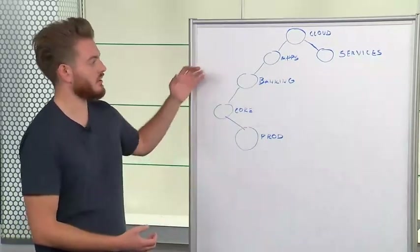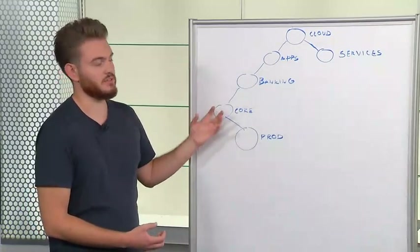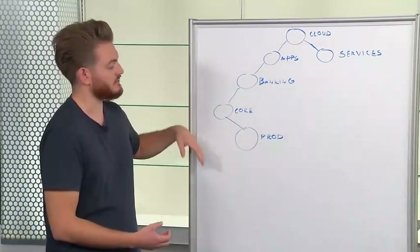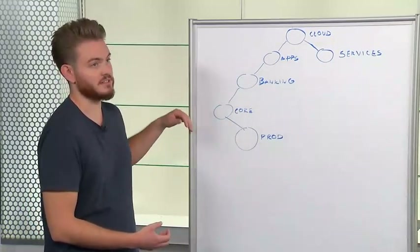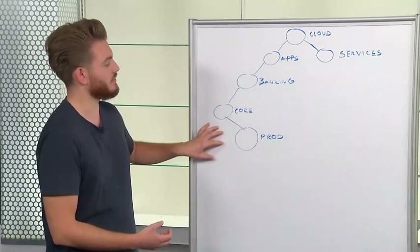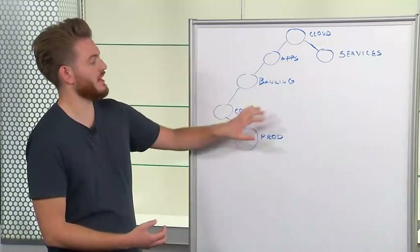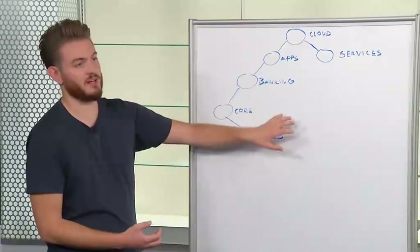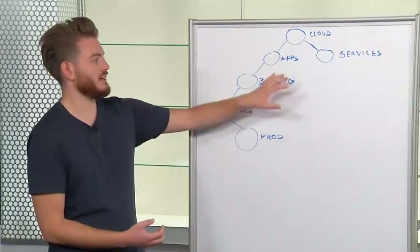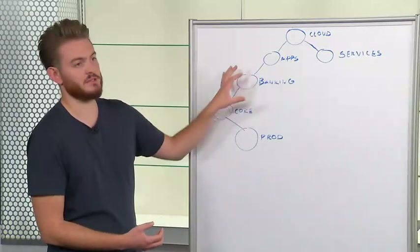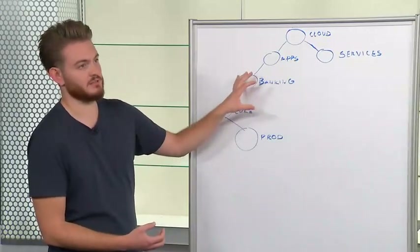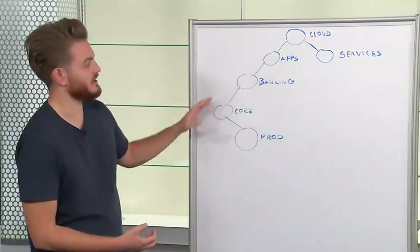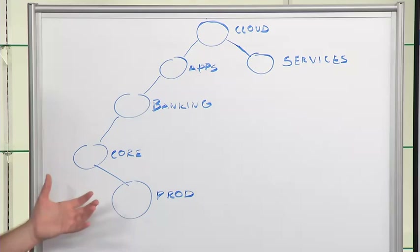In a larger real production scope tree, we would have a lot more different leaf nodes. We would have dev testing underneath core, we would have multiple applications under banking, and clearly we would have more than just the banking application. We've tried to keep it nice and simple.